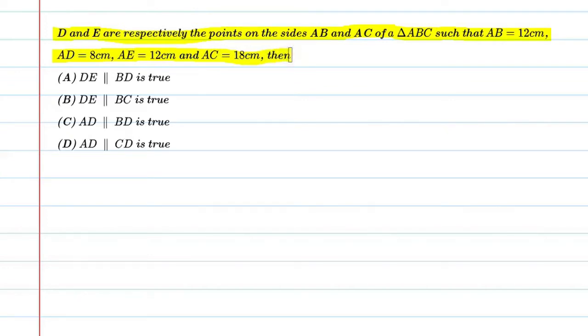Then, alright, so let's start with this question. First, we will write given. Given is AB is equal to 12 cm, AD is equal to 8 cm, AC is equal to 18 cm, and AE is equal to 12 cm.